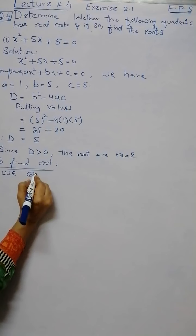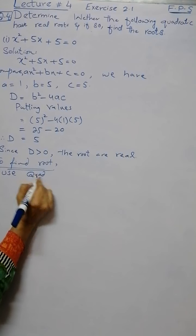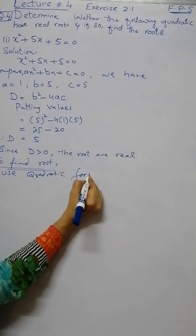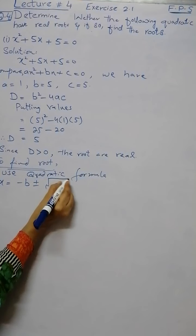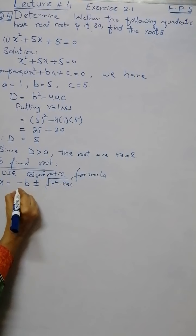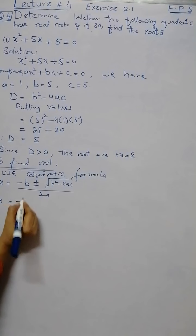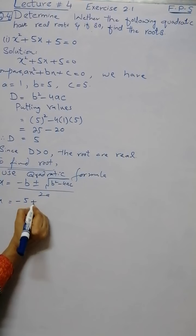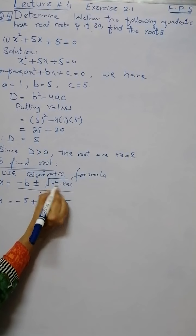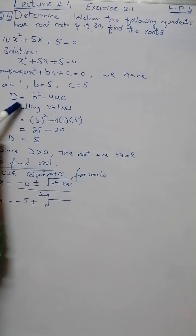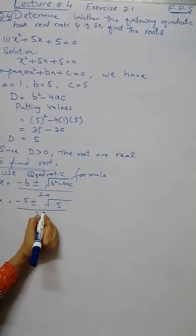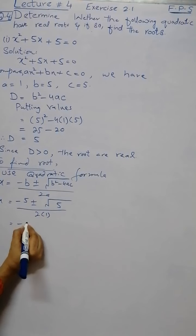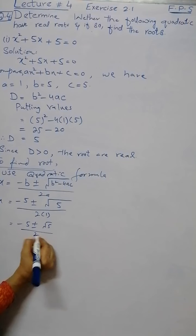Use quadratic formula, which is x = (-b ± √(b² - 4ac)) / 2a. By putting the values here, the value of b² - 4ac, which is discriminant, is 5. So the roots are -5 ± √5 divided by 2a.